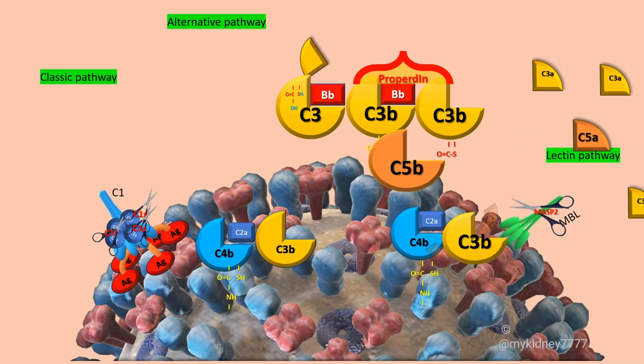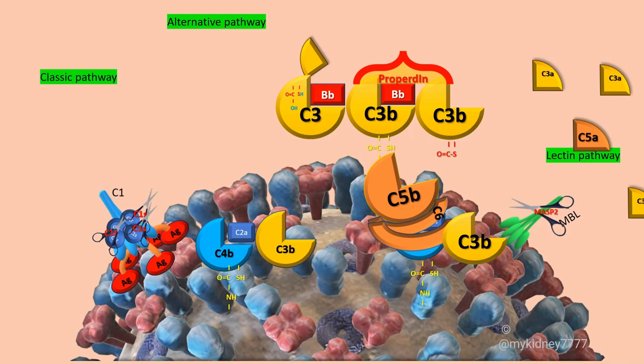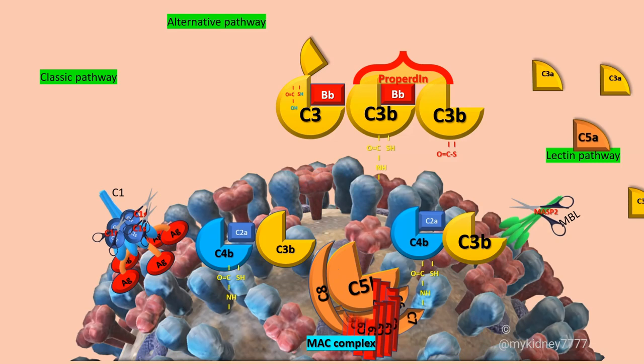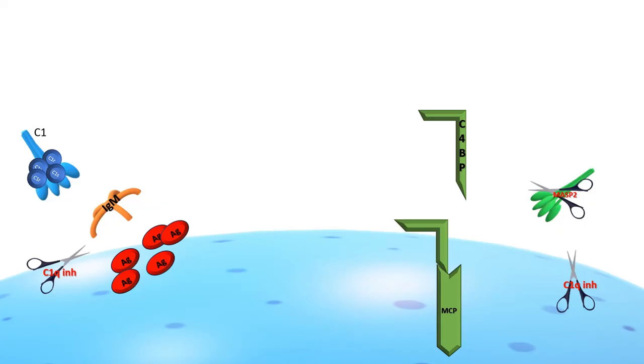C5B is stabilized by the binding of C6, and the binding of C7 exposes a hydrophobic site which allows the attachment to the membrane. The complex C5BC6C7 attached to the membrane binds C8, which polymerizes C9, forming the membrane attack complex, and the target cell will be lysed by osmosis.